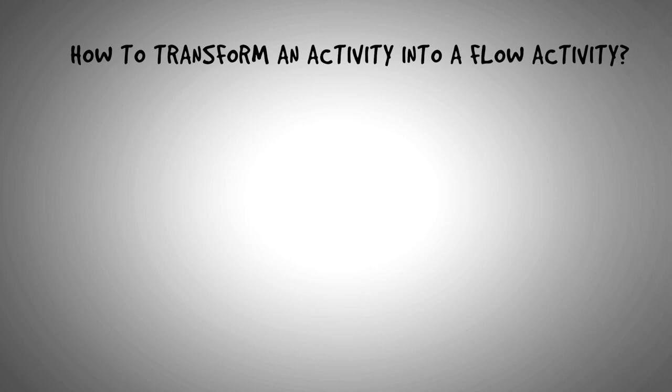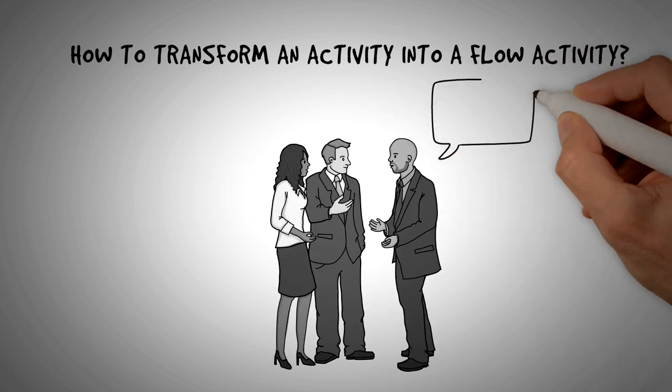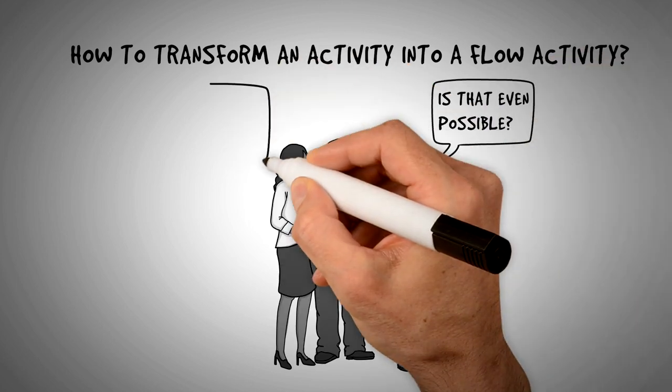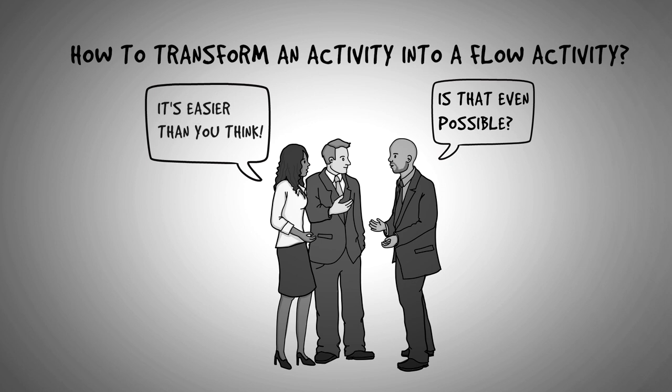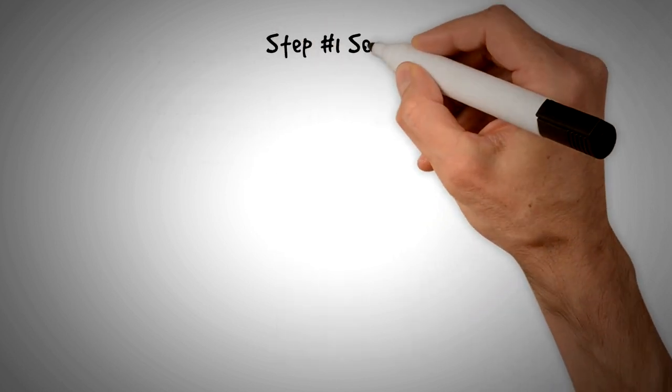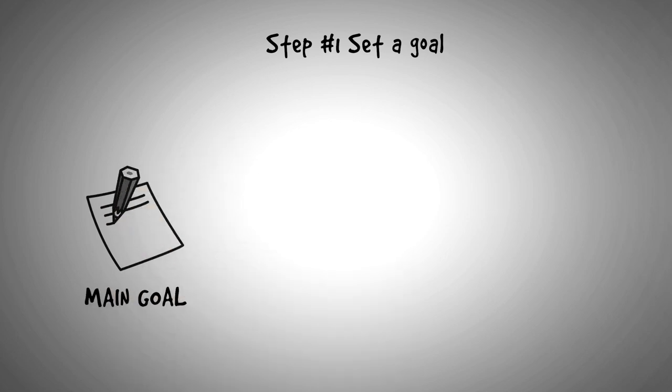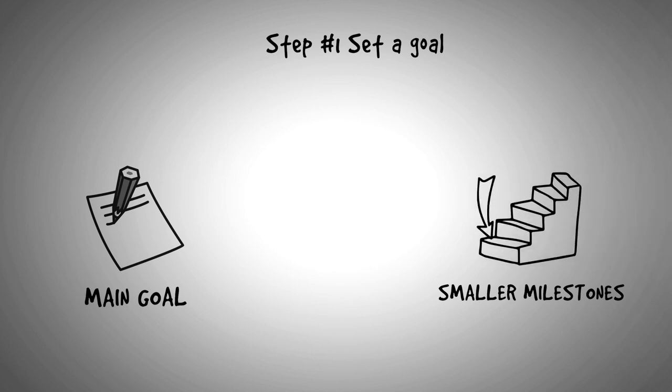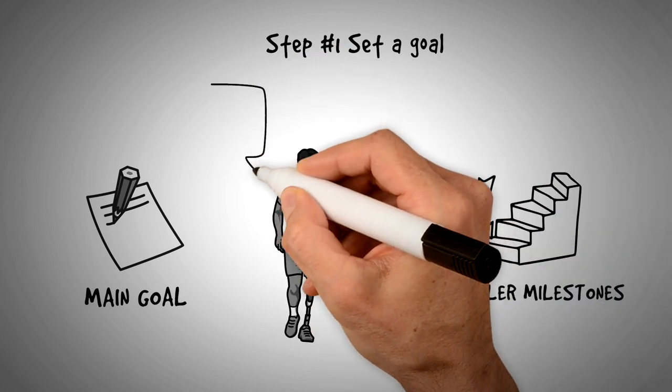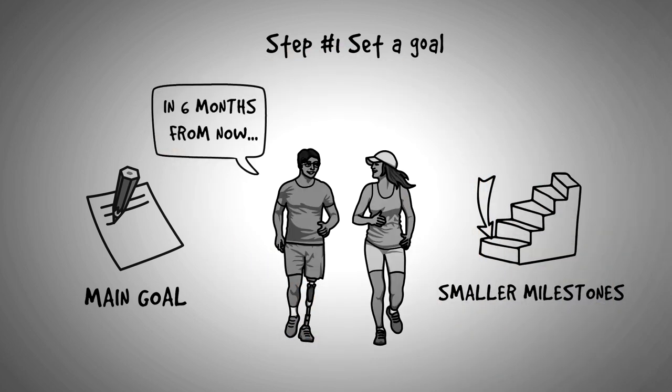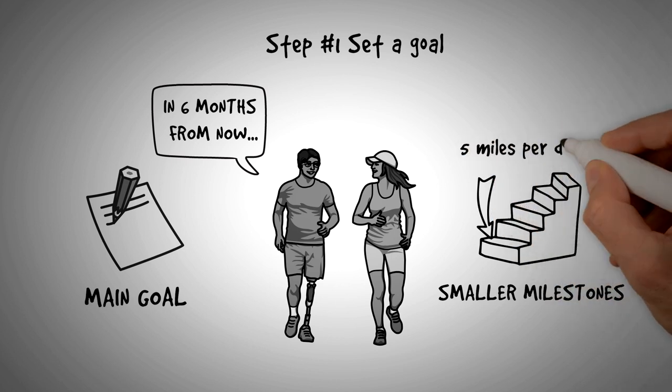And now you might be thinking, how can I transform an activity into a quote unquote, flow activity? Is that even possible? And the answer is, it is easier than you think. So let's go ahead and do it. Step number one is to set a goal. Write down your main goal for that activity and other smaller milestones you might want to achieve. Say your ultimate goal is to run a marathon six months from now. Write that down with some smaller milestones like run five miles per day or run half a marathon three months from now.